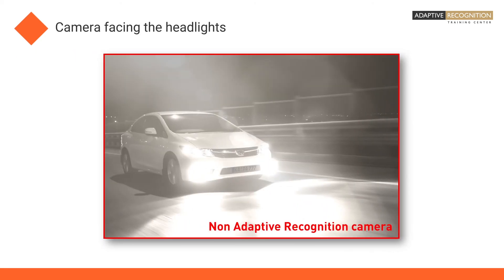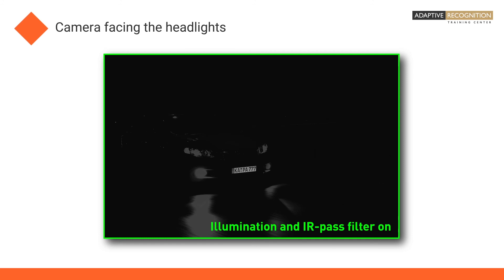If you have limitations and the camera must be placed at the level of the headlights, don't worry. By switching the camera's IR filter to IR Pass and turning on the illumination, the camera will return a crystal clear image from the license plate since the headlights will be filtered out almost completely.